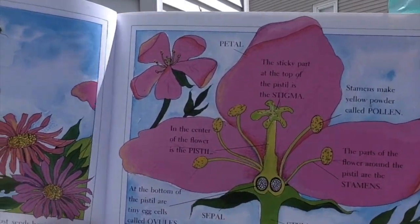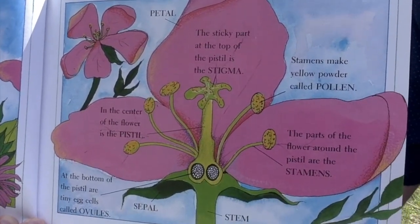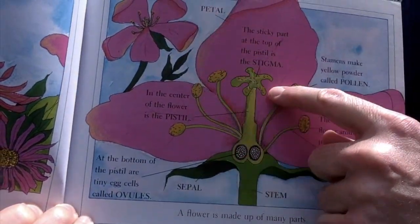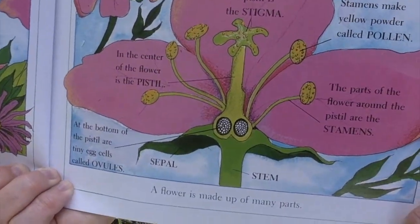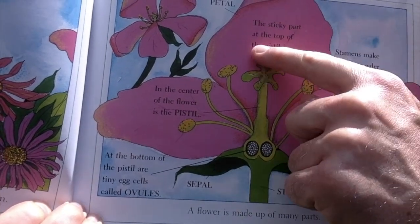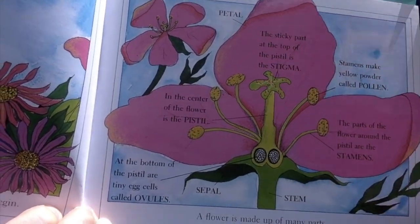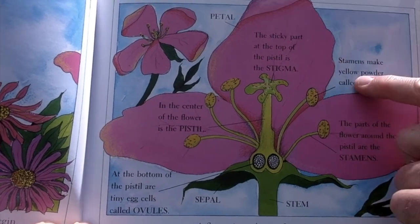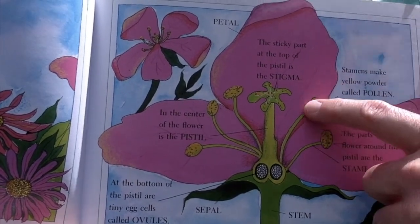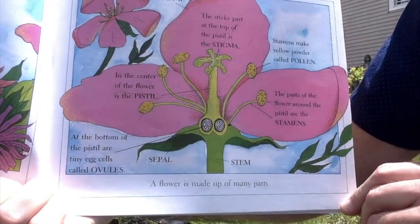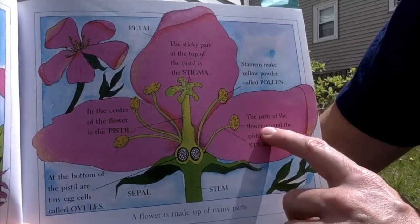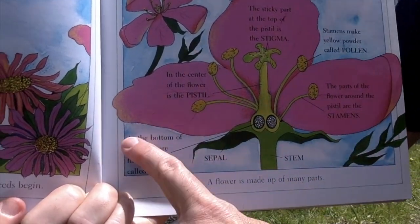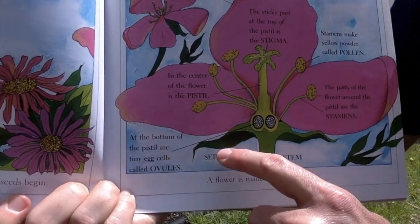A flower is made up of many parts. Look at what Gail Gibbons has done — she's drawn a picture of the flower and sliced it in half so we can see the inside parts. This is the petal, the pink part. The sticky part at the top of the pistil is the stigma. In the center of the flower is the pistil — that's the tall part. Stamens make yellow powder called pollen. At the bottom of the pistil are tiny egg cells called ovules.